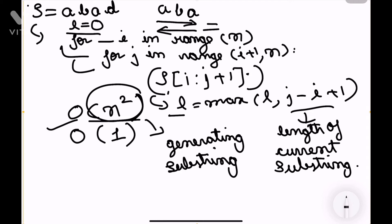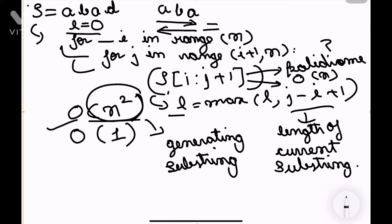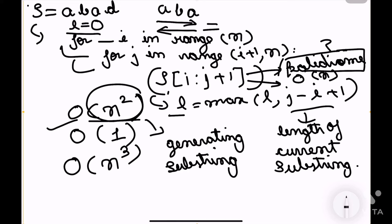But we also need to check for each substring whether it's a palindrome or not. That palindrome check takes O(n) time for each substring, since we need to traverse the length of the substring. So the total time complexity of the brute force is O(n³). Can we minimize this? Can we skip the step where we check at each step whether the string is a palindrome? Let's see how we can minimize this in the second approach.